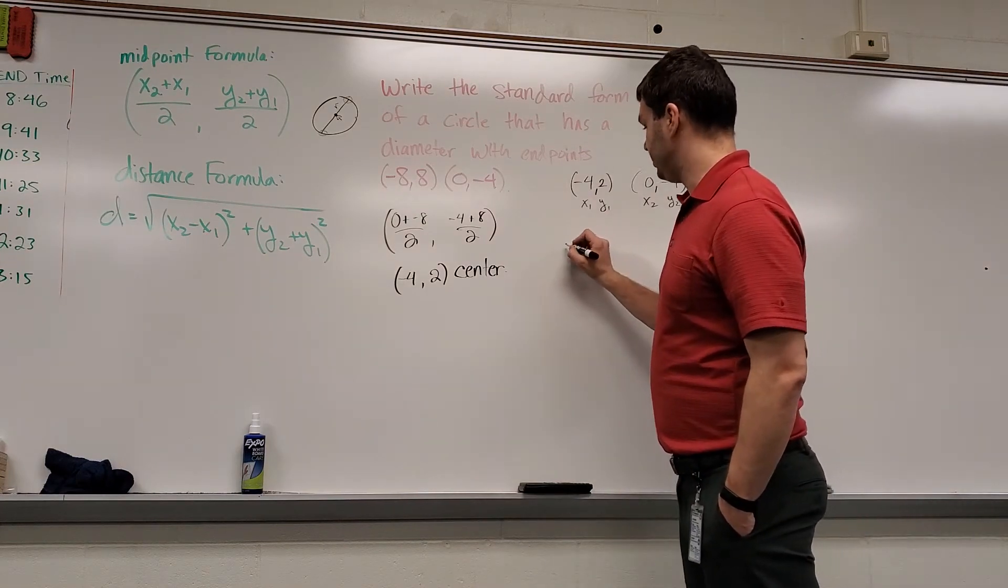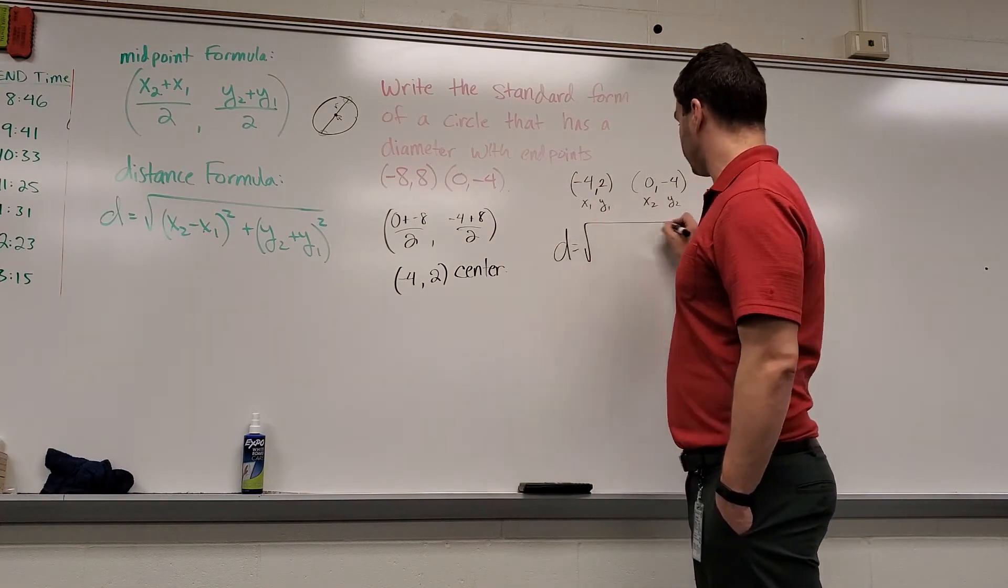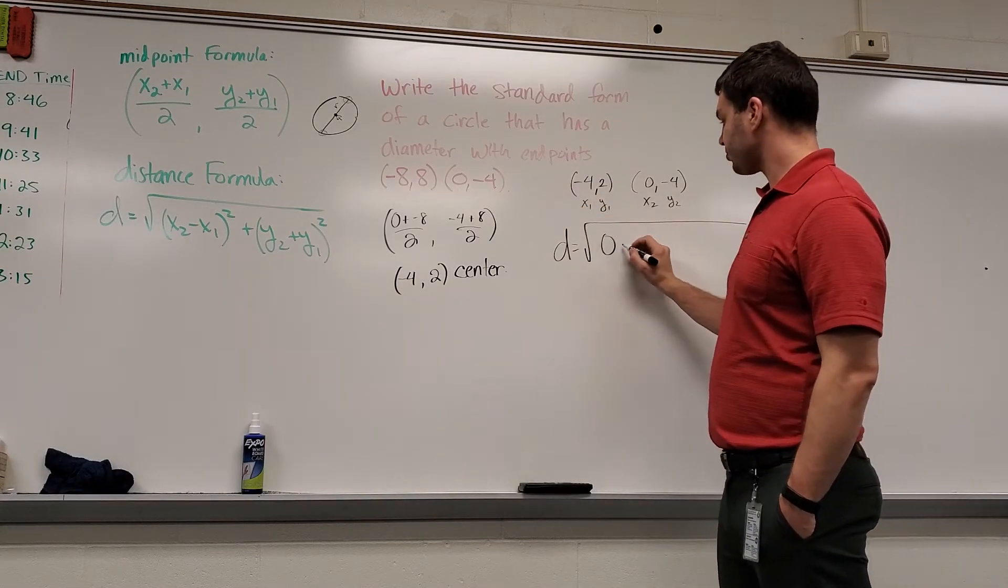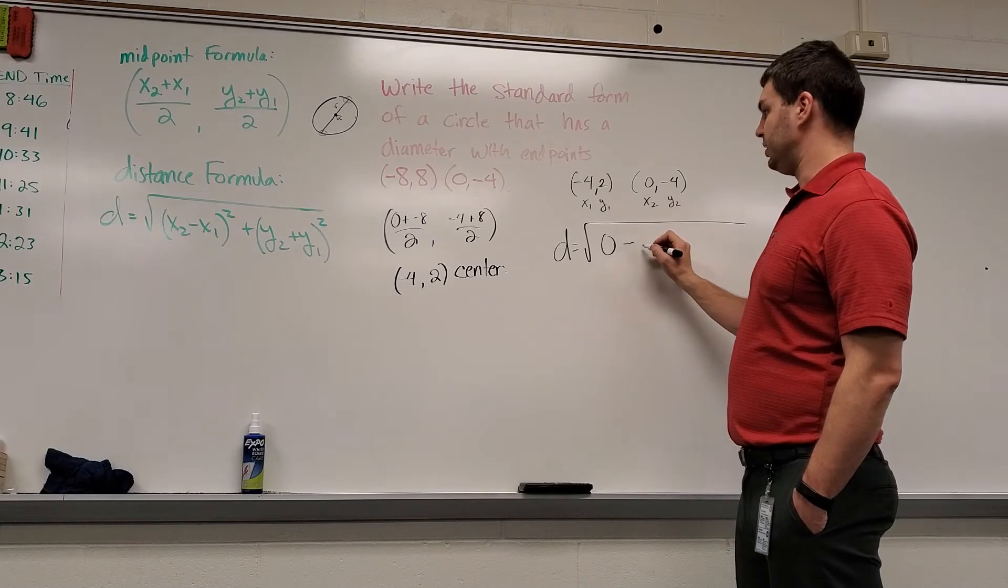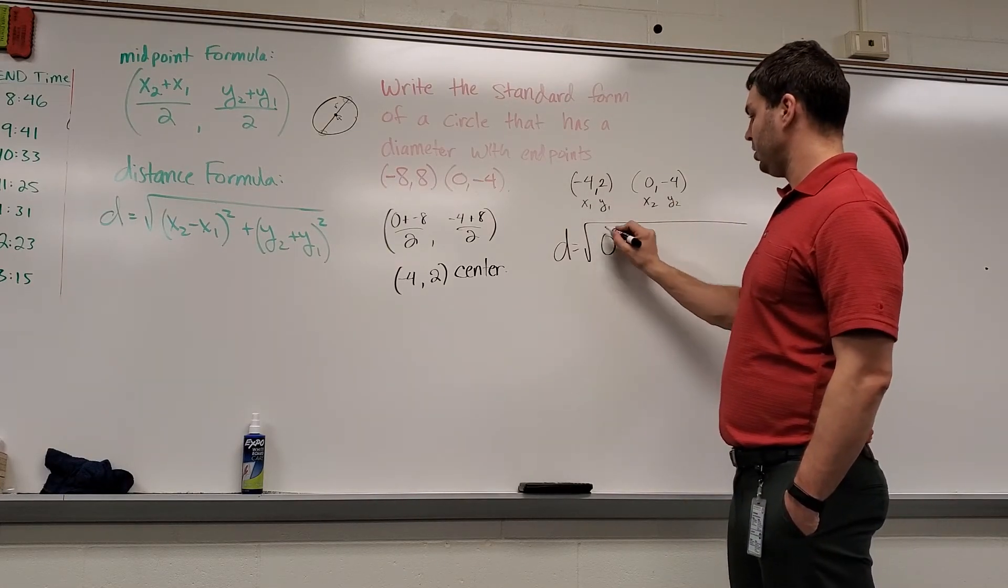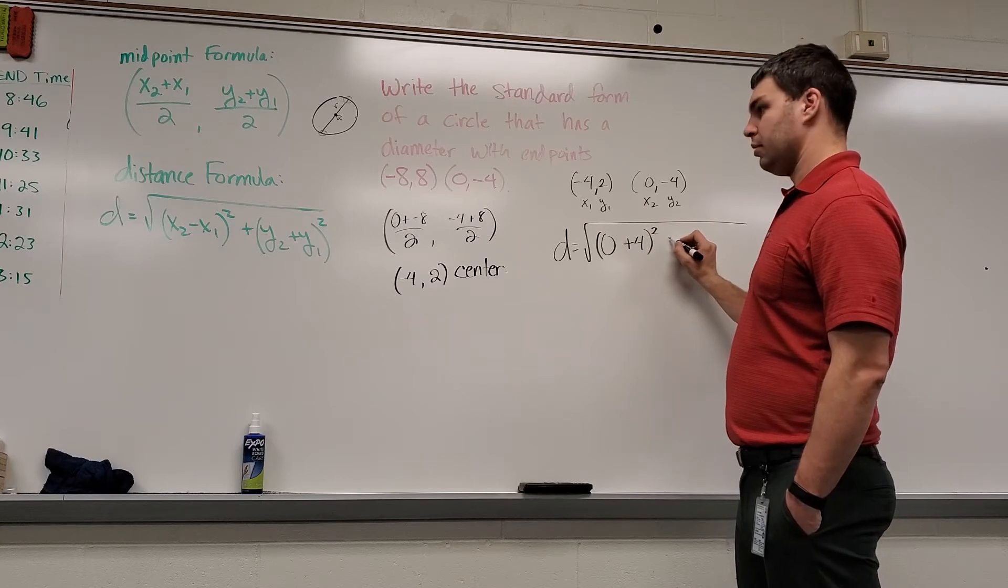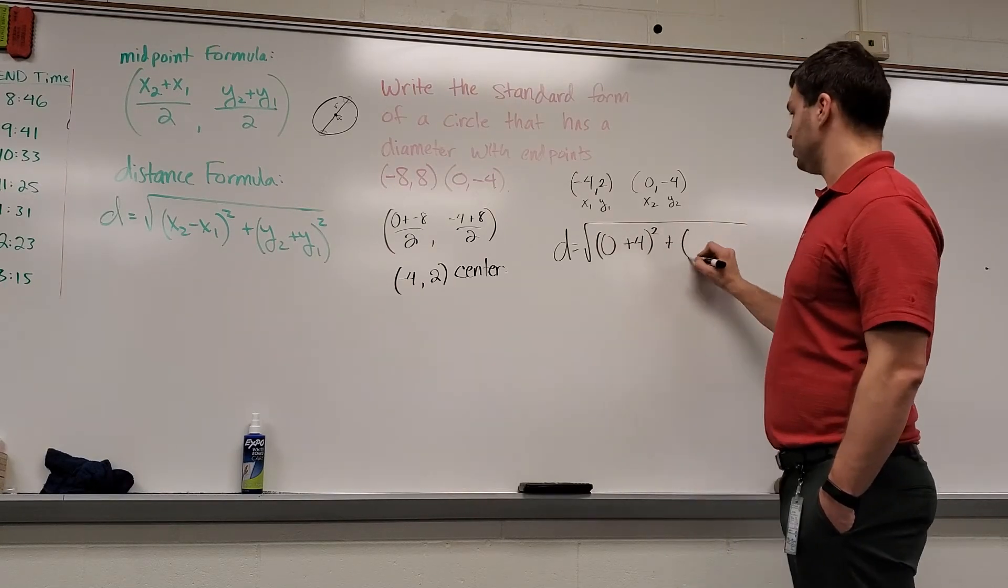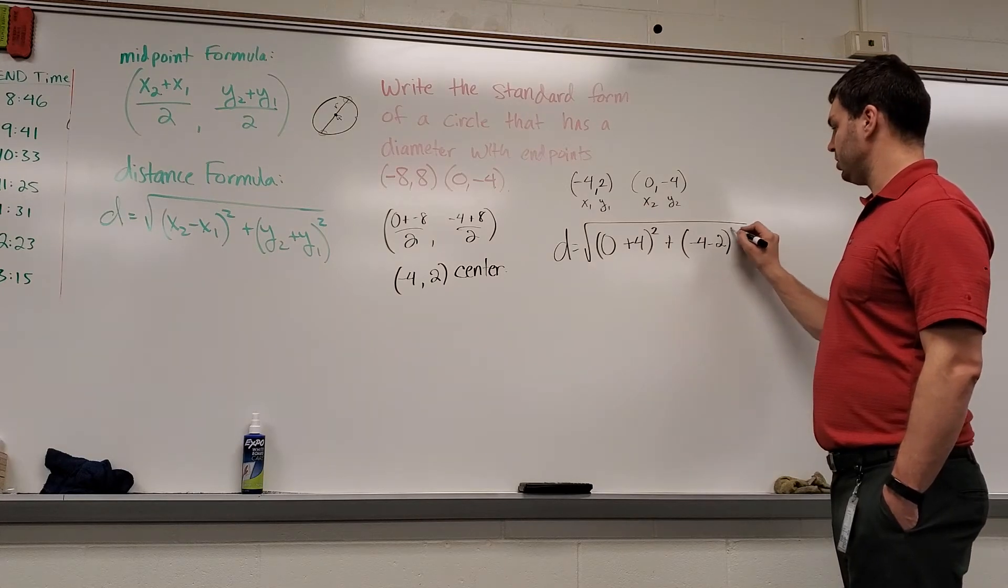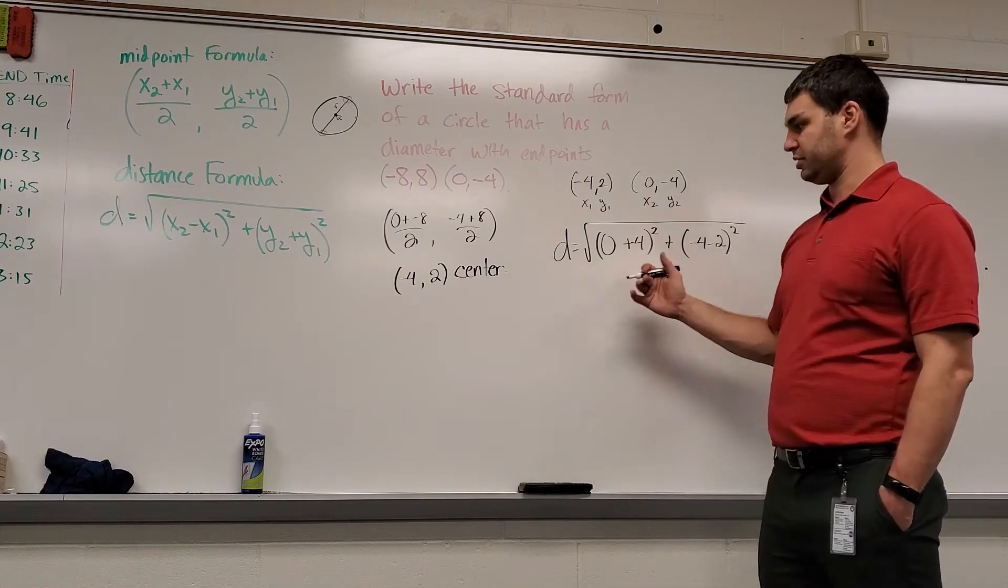So that's going to be d equals the square root. And then if I put it into my formula, x2 is 0 minus x1, so minus negative 4 is plus 4, quantity squared, plus y2 minus y1, so negative 4 minus 2, quantity squared.